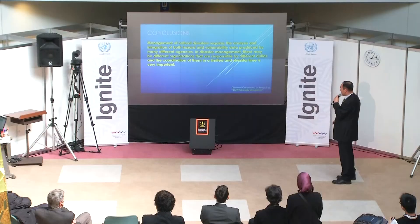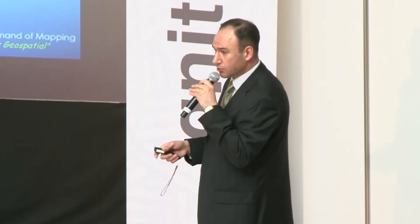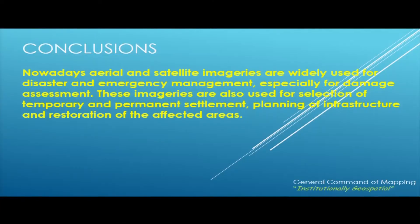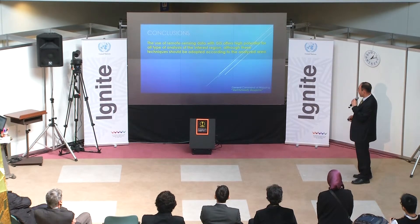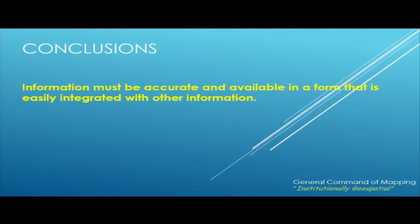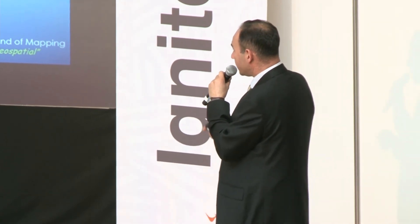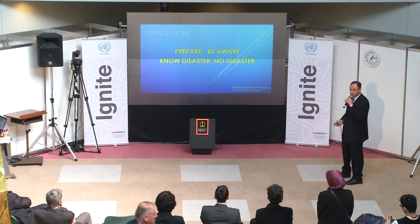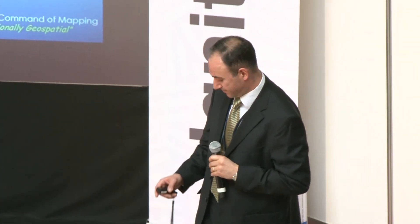Management of natural disasters requires the analysis and integration of both hazard and vulnerability data by many different agencies — this presents a significant coordination challenge. Aerial and satellite imagery are now widely used for disaster and emergency management, especially for damage assessment. The use of remote sensing data combined with GIS offers high potential for all types of analysis of the affected region. Information must be accurate, easily available, and easily integrated with other information. To conclude: prepare, be aware, and there will be no disaster.